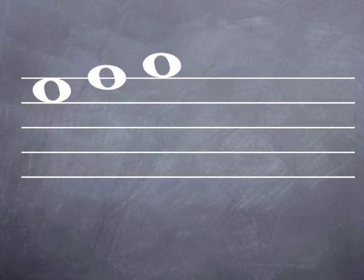If we want to keep going higher, we're going to need to add another line. We call this short little line a ledger line. And we only add them when we want to place notes above or below the staff.